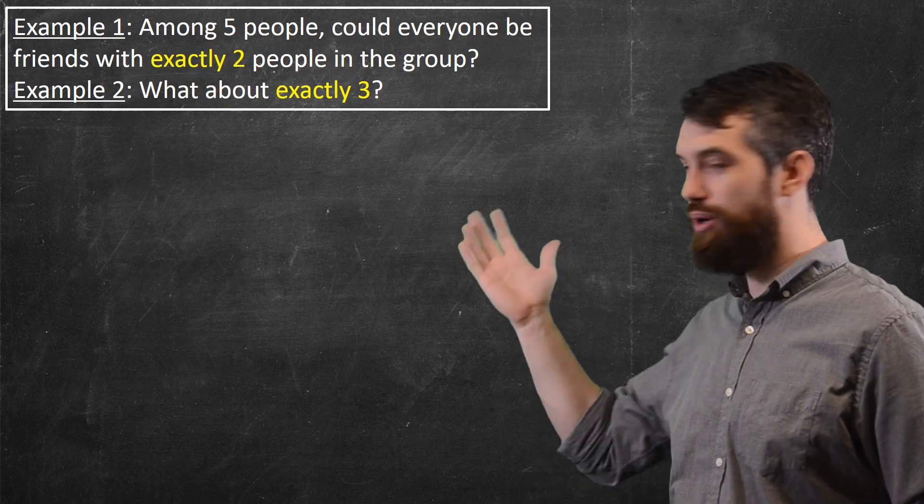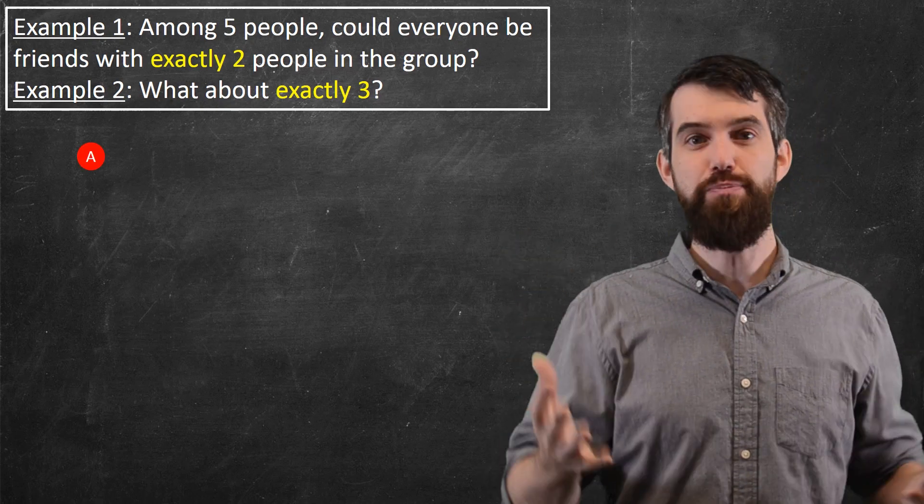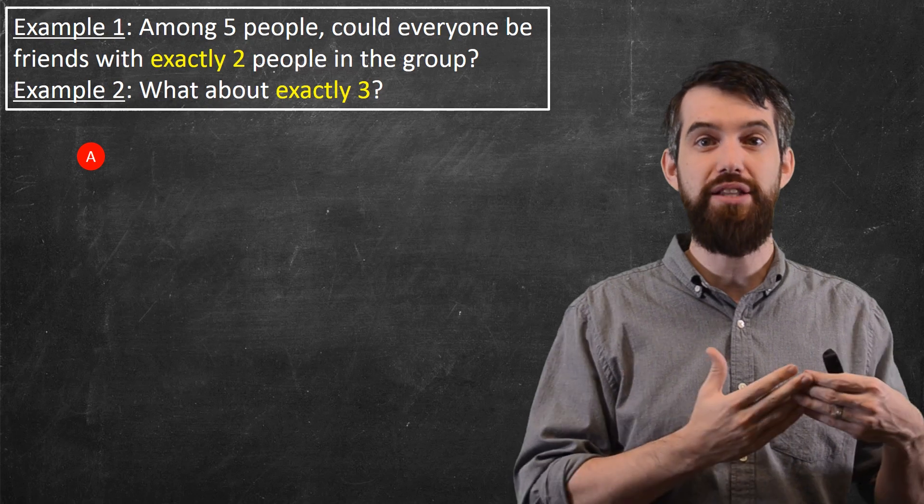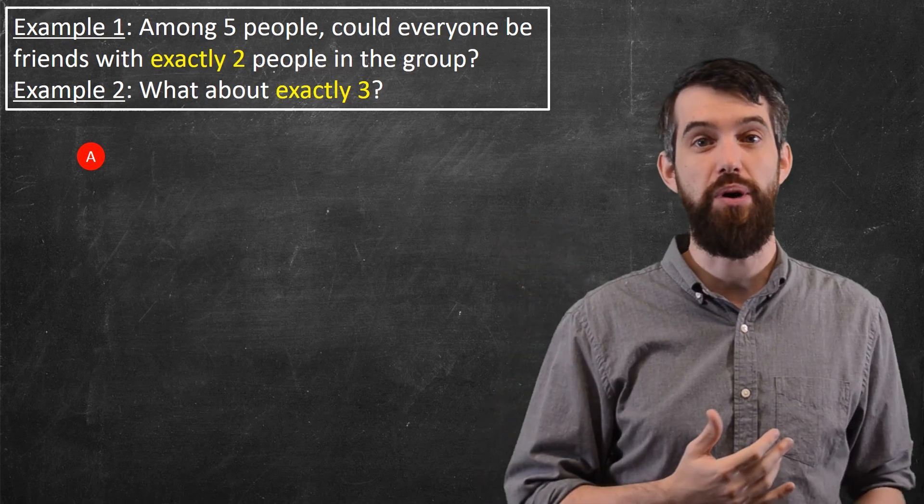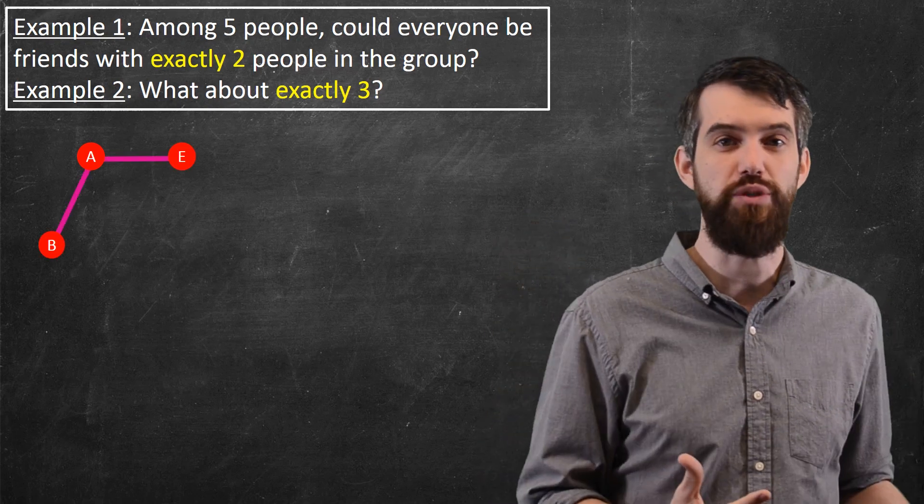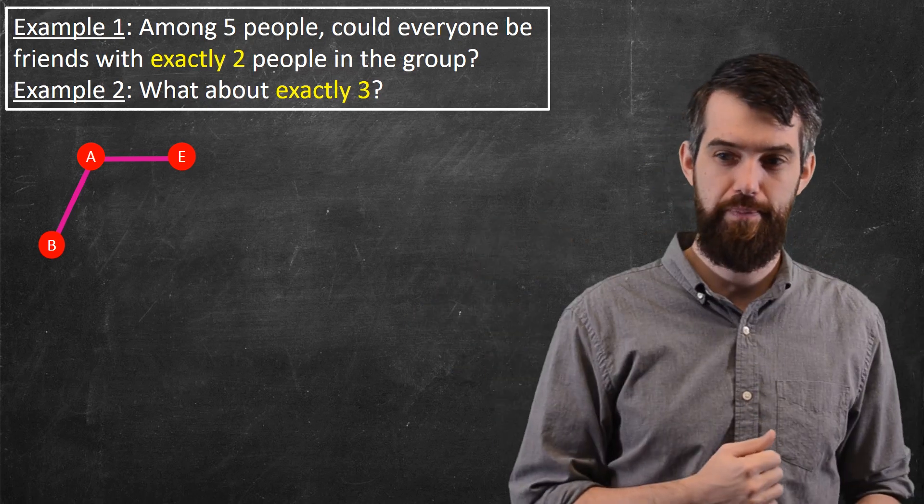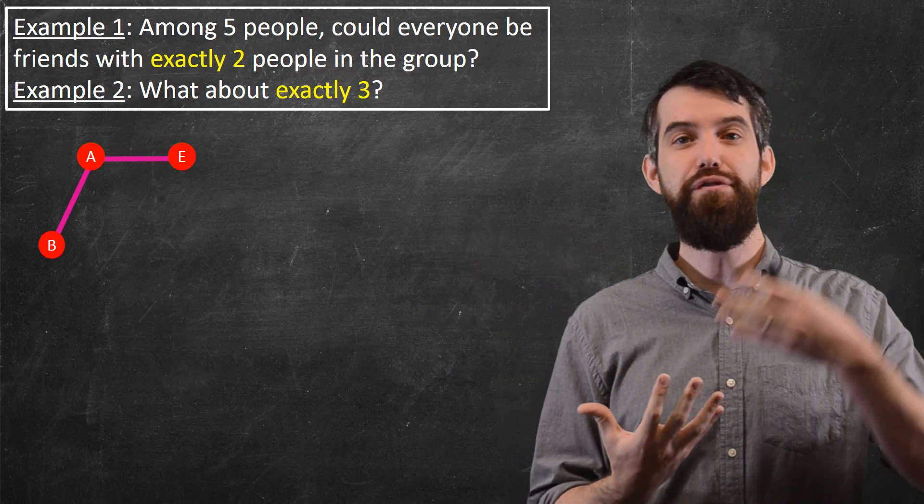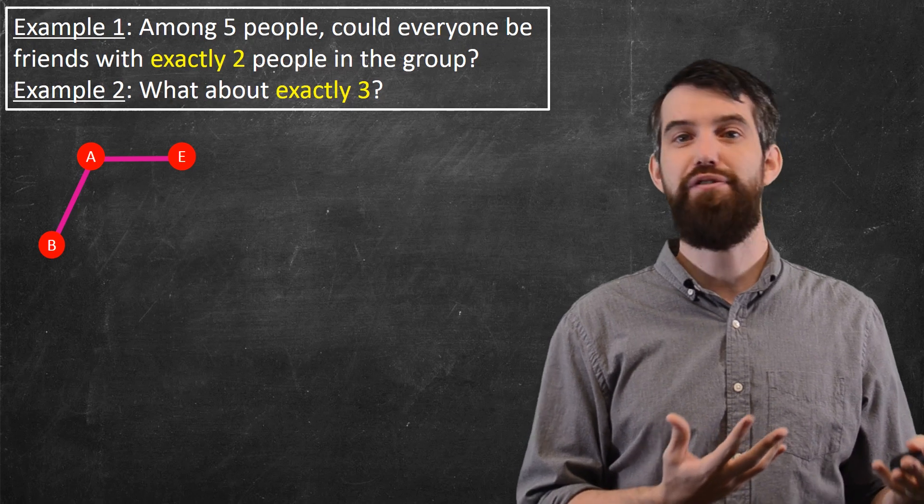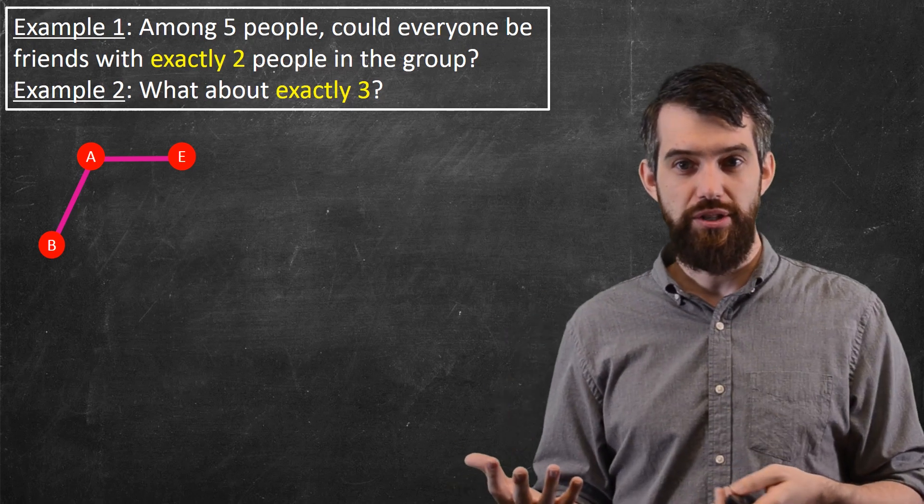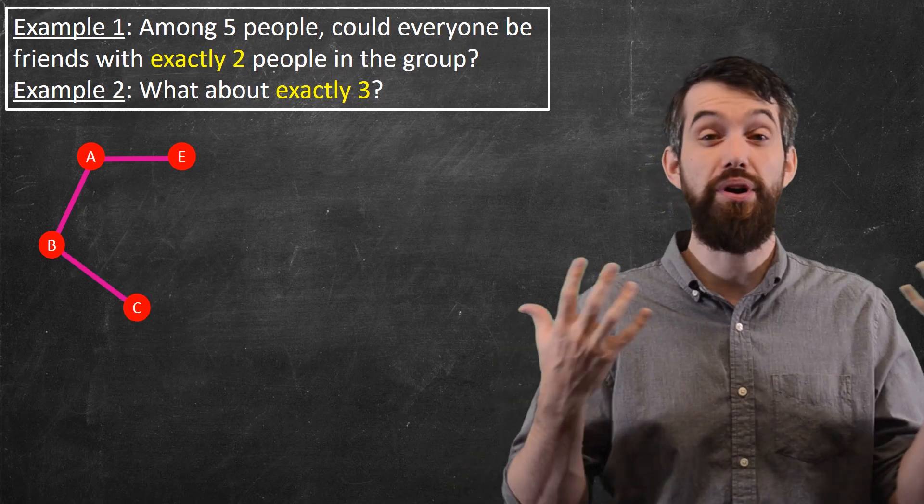Okay, so let me begin with some person called A. Now, this person, the rule is that they have to be friends with two other different people. So, I'll put two other people that they're friends with. I'll call them B and E. Okay, now let's think about B. B is already friends with A, wants to be friends with one other person. So, why don't I go and say that they're friends with someone called C.